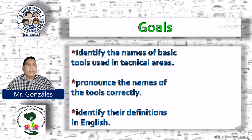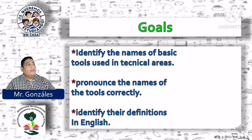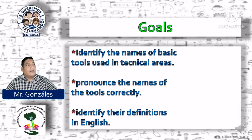Goals. Objetivos. Identify the names of basic tools used in technical areas. Identificar los nombres de herramientas básicas usadas en las áreas técnicas. Pronounce the names of the tools correctly. Pronunciar los nombres de las herramientas correctamente. Identify their definitions in English. Identificar sus definiciones en inglés.